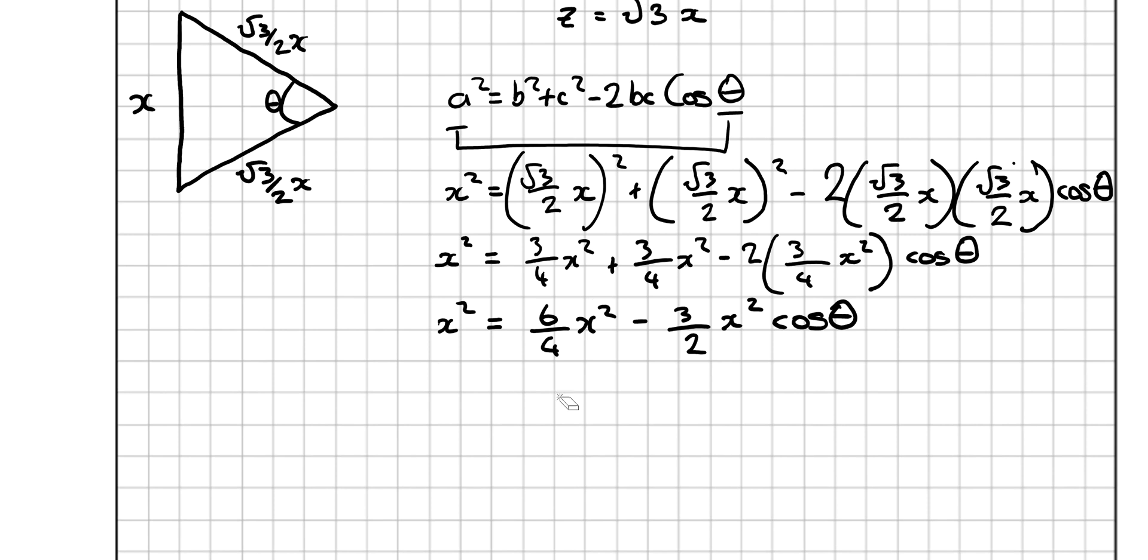This could be simplified as well. The 6 over 4 could be simplified to 3 over 2. Let's replace that with 3 over 2. x² minus 3 over 2x² is equal to minus 3 over 2x² cos θ. x² minus 3 over 2 would be minus 1 half x². But you could put that into your calculator, 1 minus 3 over 2 if you want.